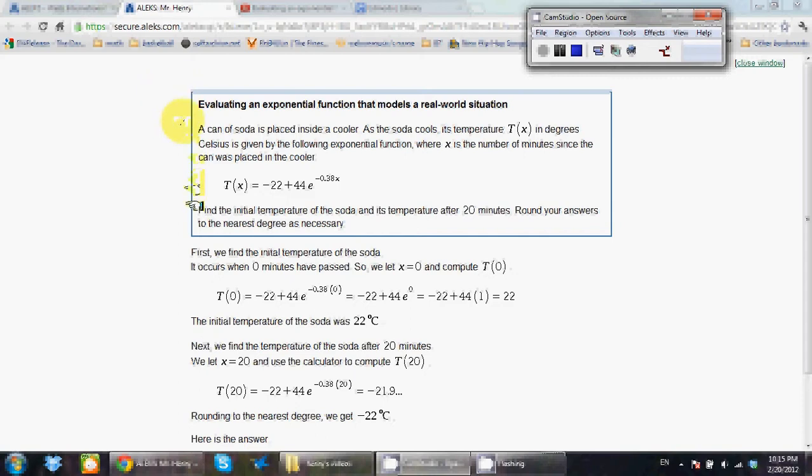So just go over the question. I'm going to give you guys a few seconds to go over the question. Alright, so basically x is the time, the number of minutes after the can was placed in the cooler. And T is basically this right there, this formula will let us find the temperature of the can after x minutes in the cooler.